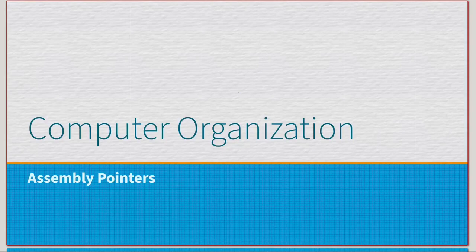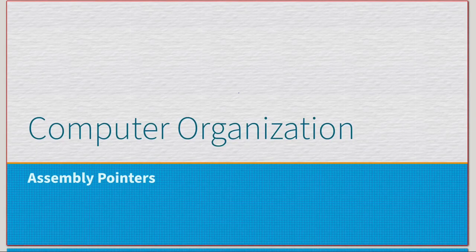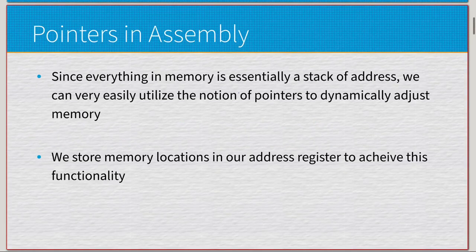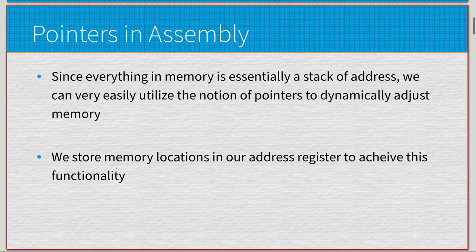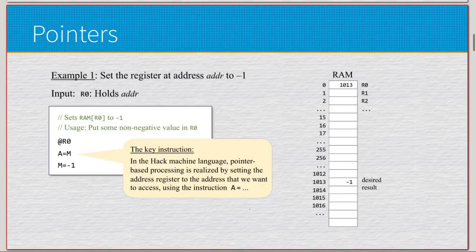Since everything in memory is essentially a stack of addresses, we can very easily utilize the notion of pointers to dynamically adjust memory. We store memory locations in our address register to achieve this functionality. The A register is going to be the most key element to dealing with pointers. Let's take a look — we have an example: set the register address in D to negative one, input is R0 which holds the address.